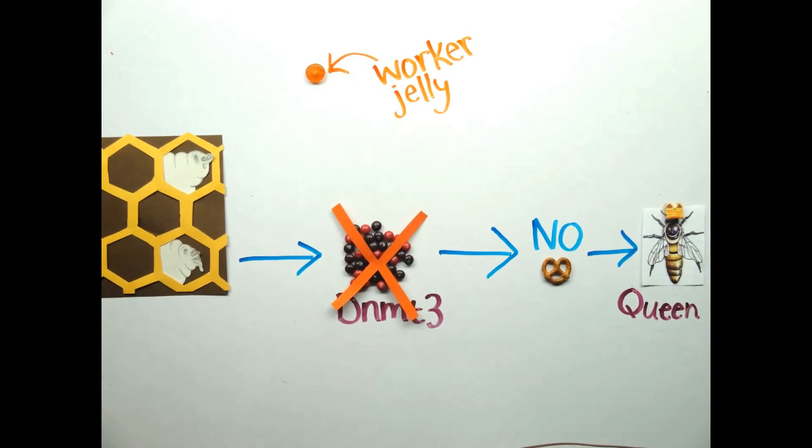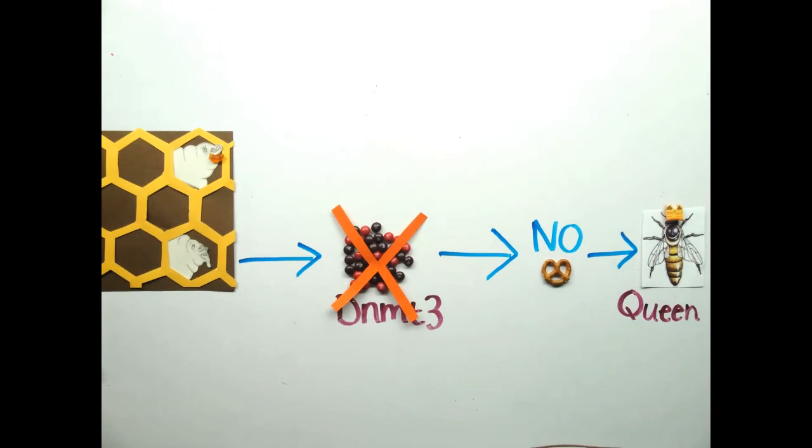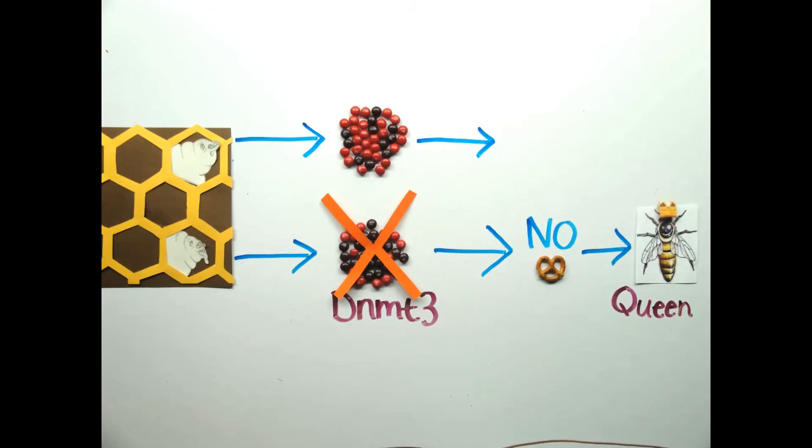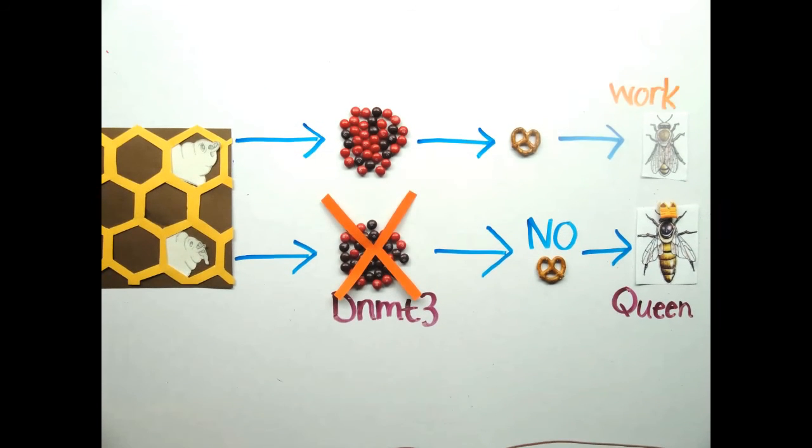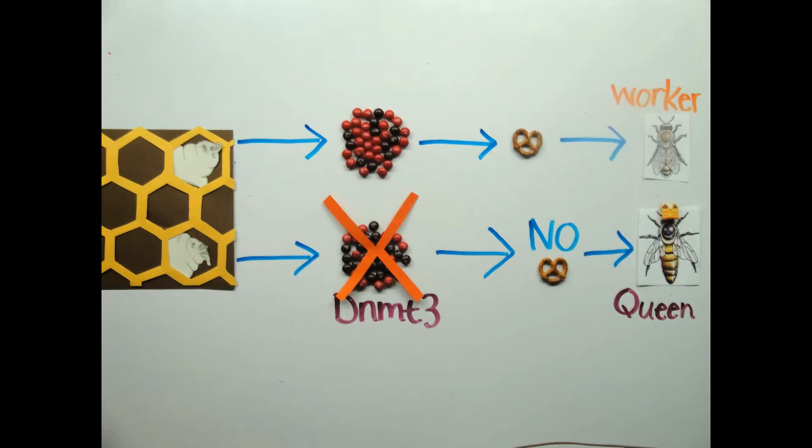When larvae are fed worker jelly, DNMT3 is active, the DNA is methylated, and the larvae develops into worker bee.